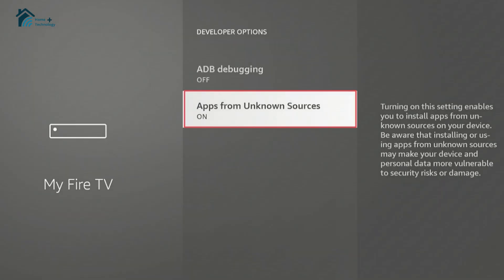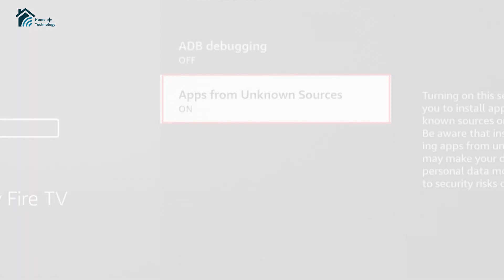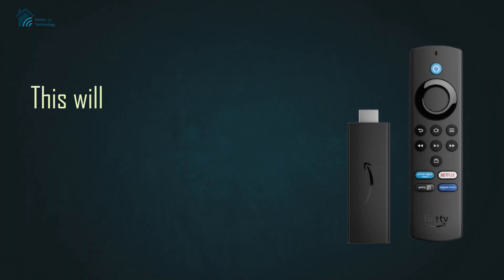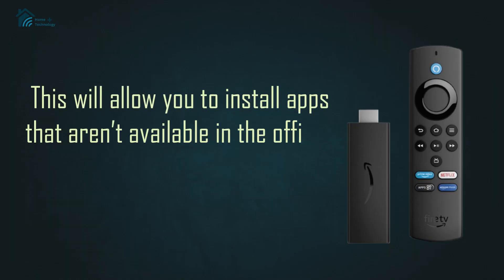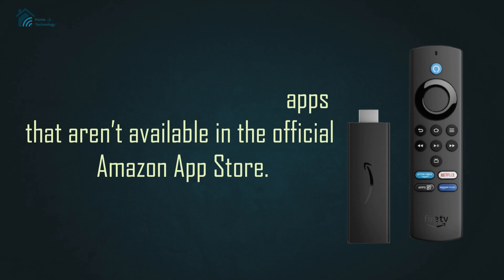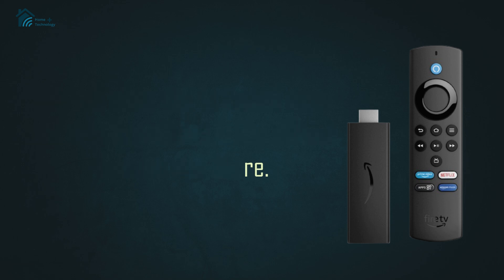If you see Apps from Unknown Sources, make sure it's turned on. This will allow you to install apps that aren't available in the official Amazon App Store.